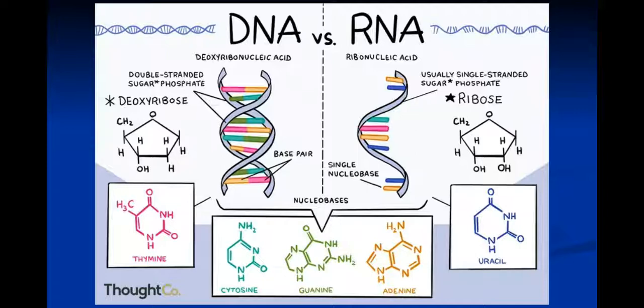we have our nitrogenous bases. There's going to be some subtle differences you may recall. So within DNA, we have thymine represented by the capital letter T, and on the RNA side we have uracil, represented by the capital U.